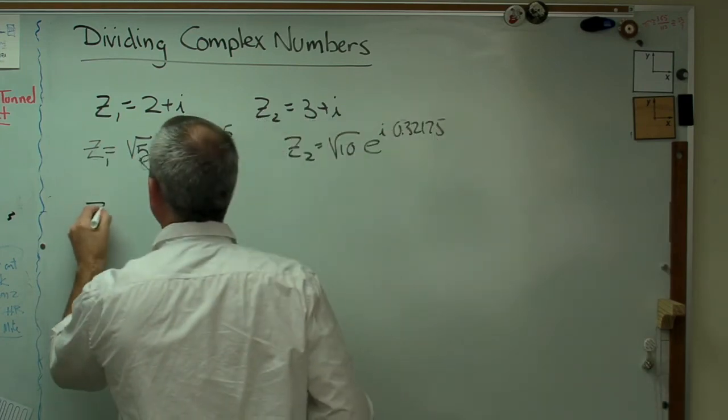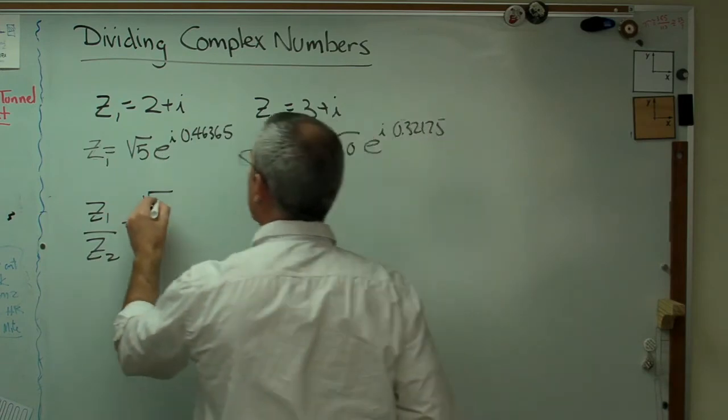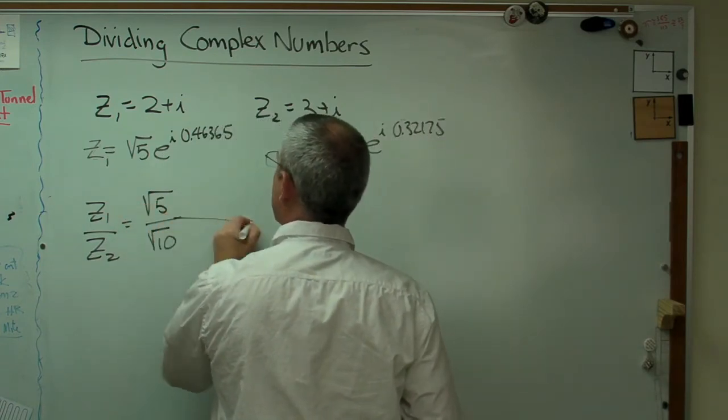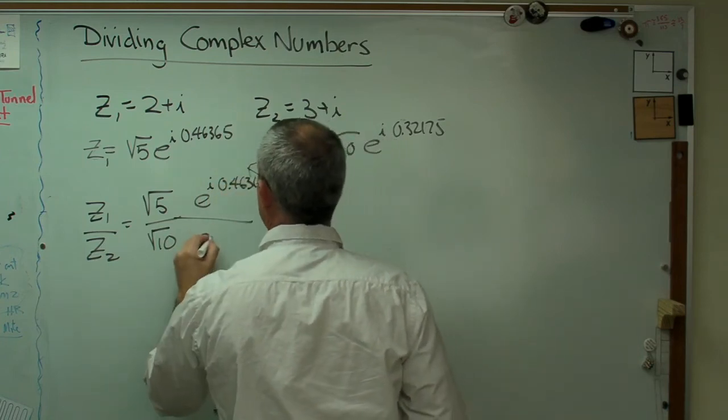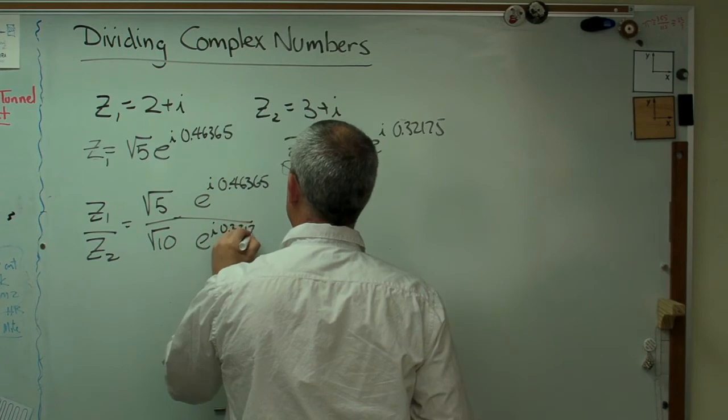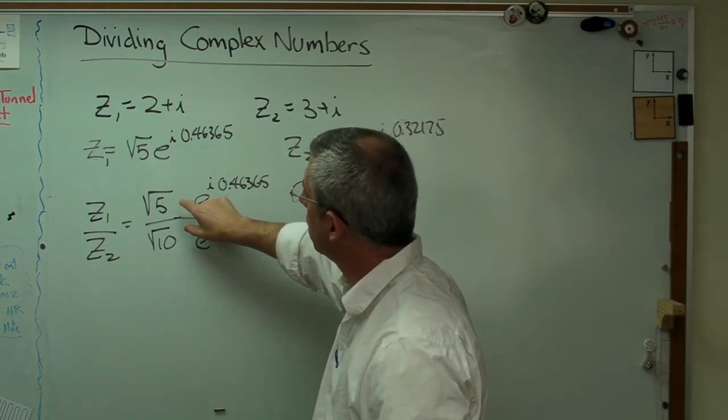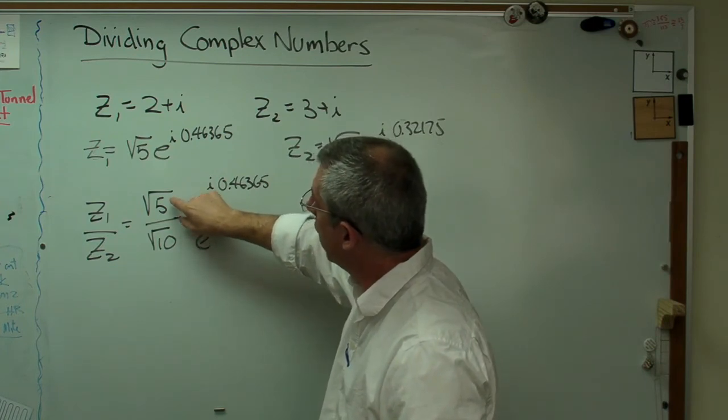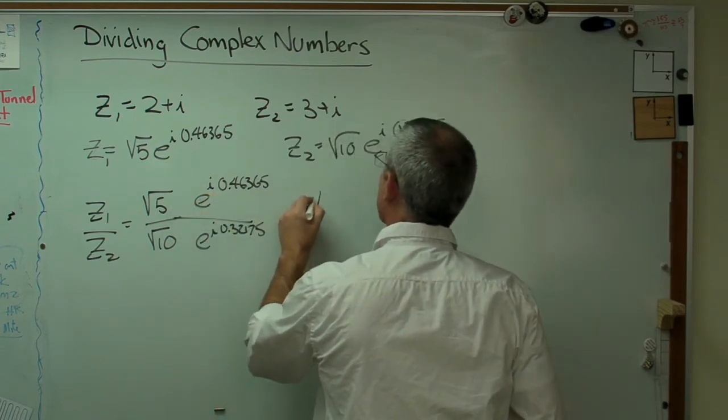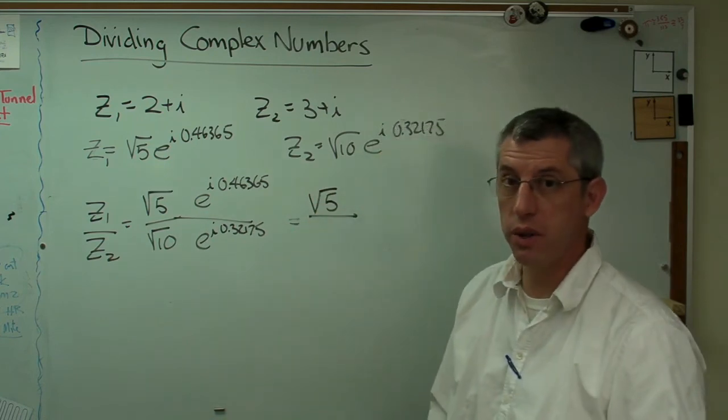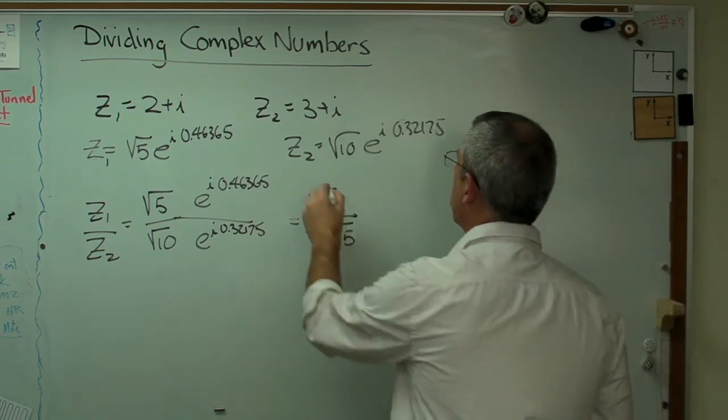Now, if I want to divide z1 by z2 again, I'm just going to write these out in this polar form. There's e to the i times 0.46365, and that's e to the i 0.32175. This is looking a lot less intimidating now. And I can work the division out in two different steps here. I can work with the real numbers first. Square root of 5 over the square root of 10. What's that? Well, square root of 10 is really the square root of 2 times the square root of 5. Well, I can express it that way. That cancels out. So that's handy.